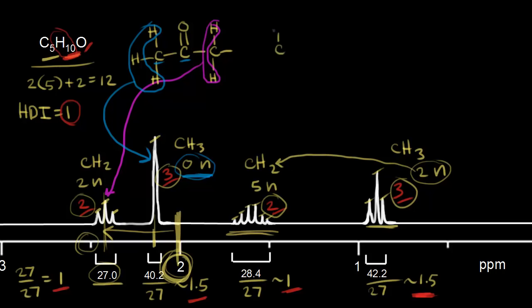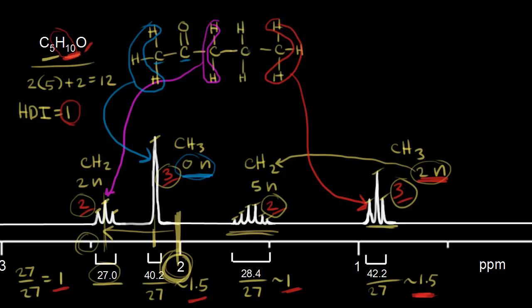Let's draw in our methyl protons and make them red. These red protons are giving us this signal, and from the signal we know these methyl protons are next to two neighbors. So there must be a CH2 next to that methyl — let's draw in that CH2, which must correspond to this other signal.